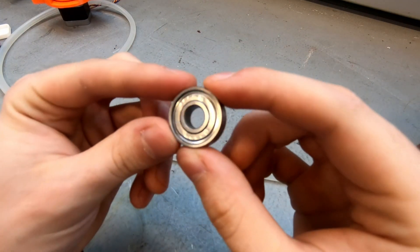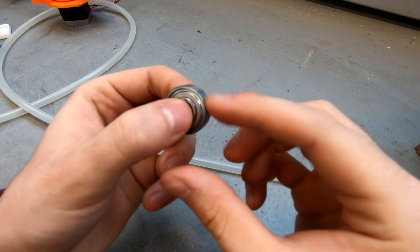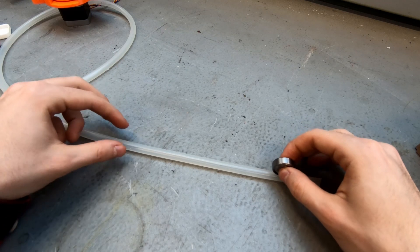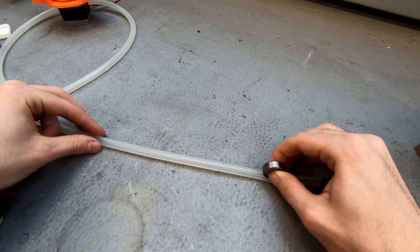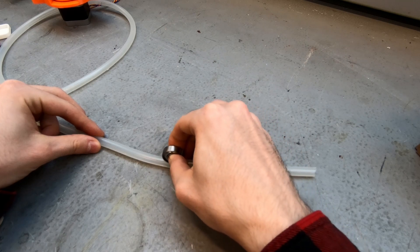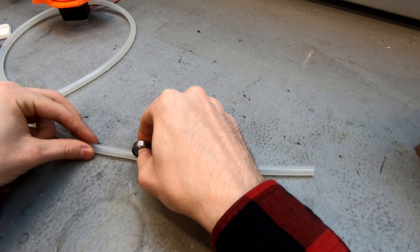You also need a roller. This is a 608 roller bearing and the working principle of the pump is that you take the bearing or your roller and you roll it along the tube, squeezing the liquid forward as you go.